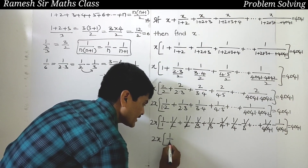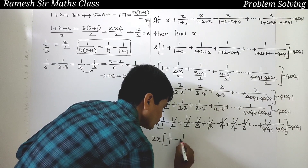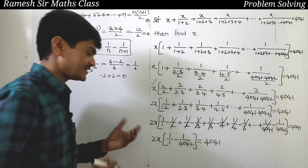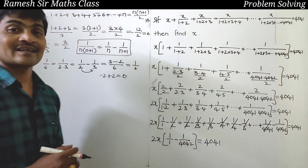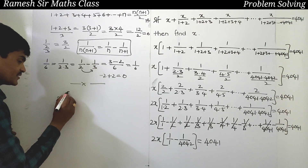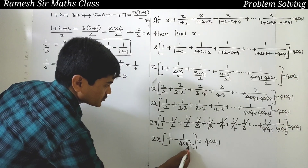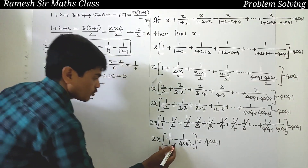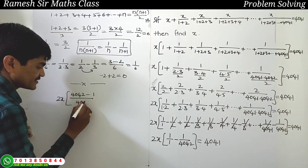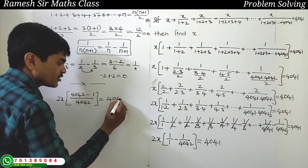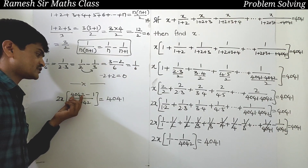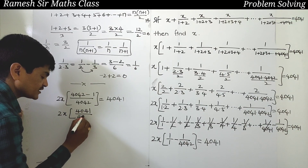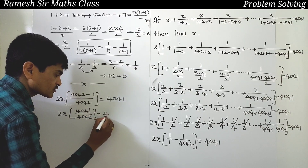This is a telescoping series. Most terms cancel: minus 1/2 and plus 1/2 cancel, minus 1/3 and plus 1/3 cancel, and so on. We are left with 2x times (1 minus 1/4042) equals 4041, which gives 2x times 4041/4042 equals 4041.